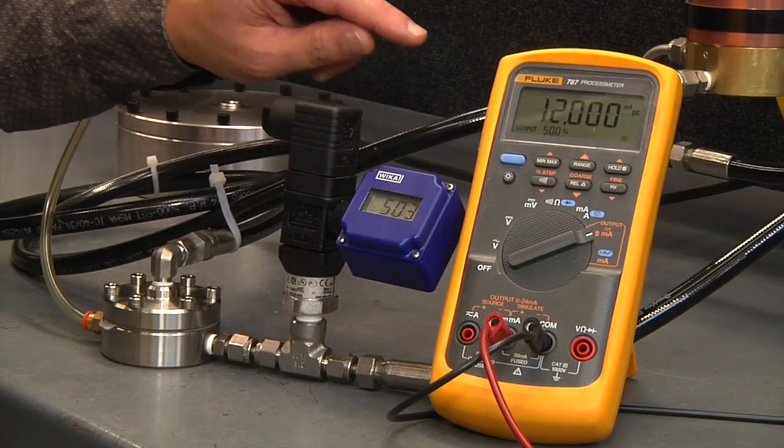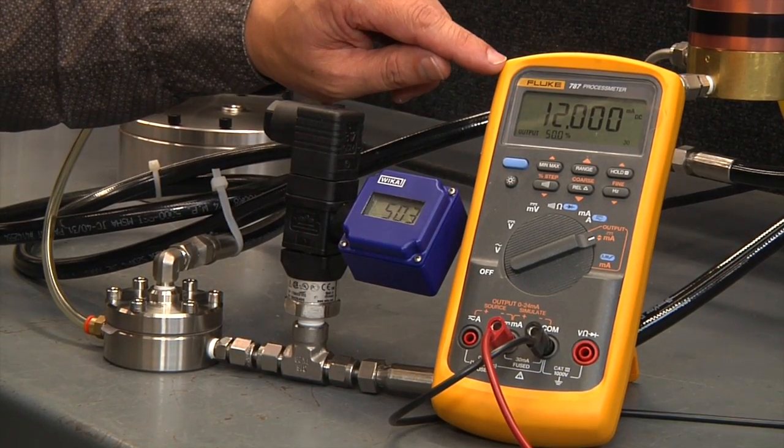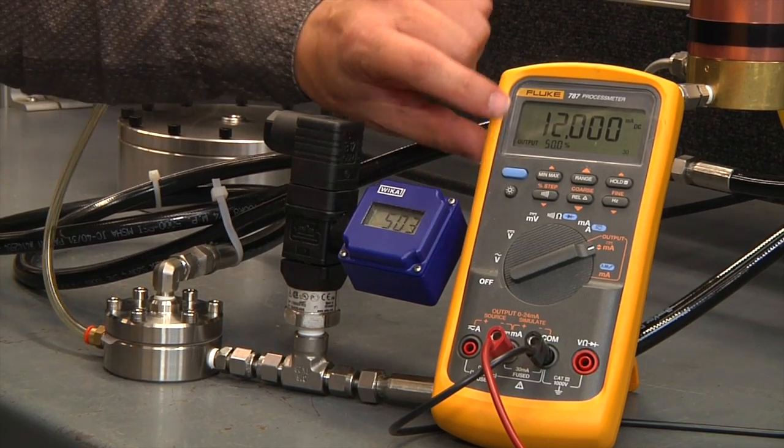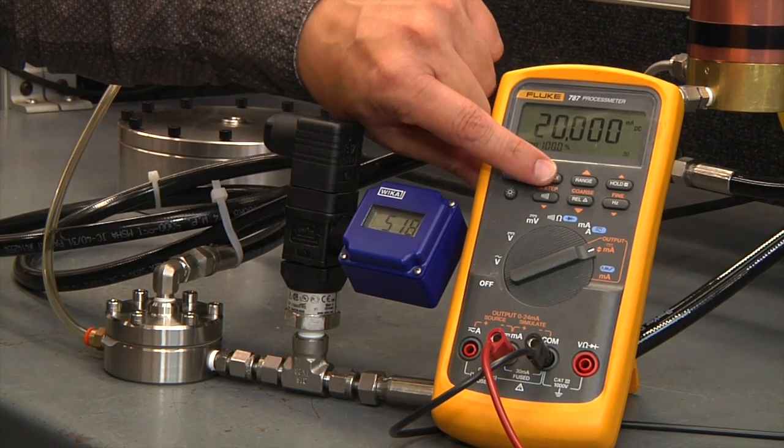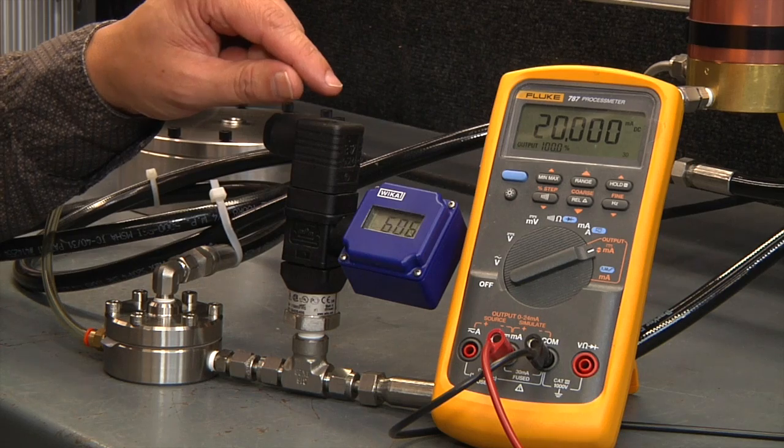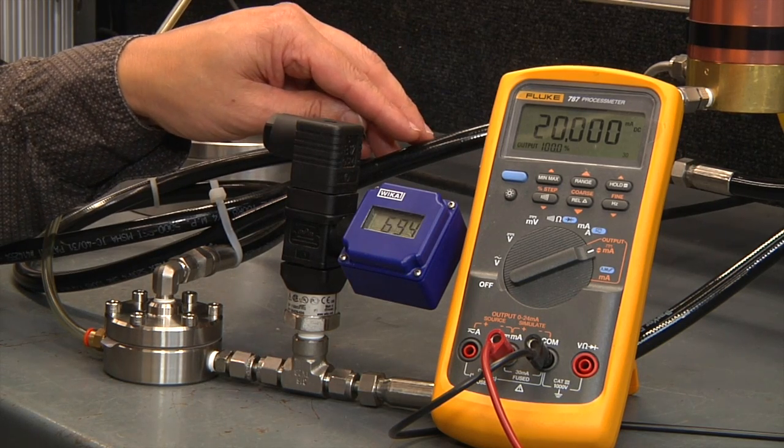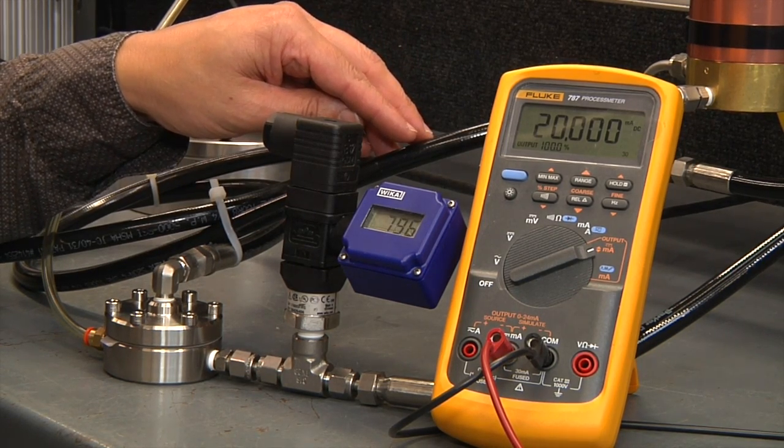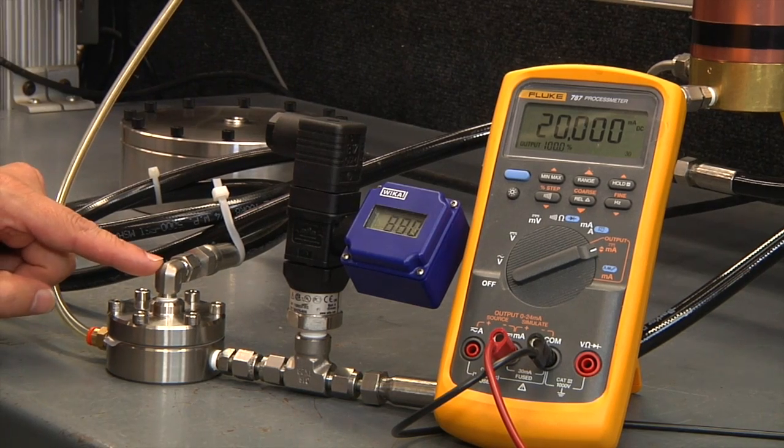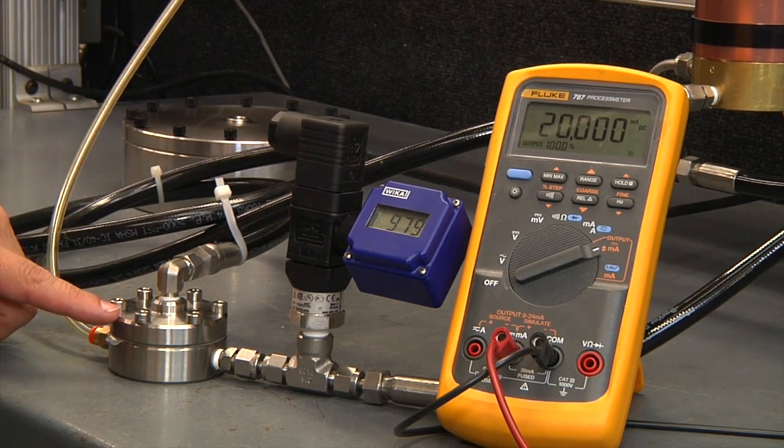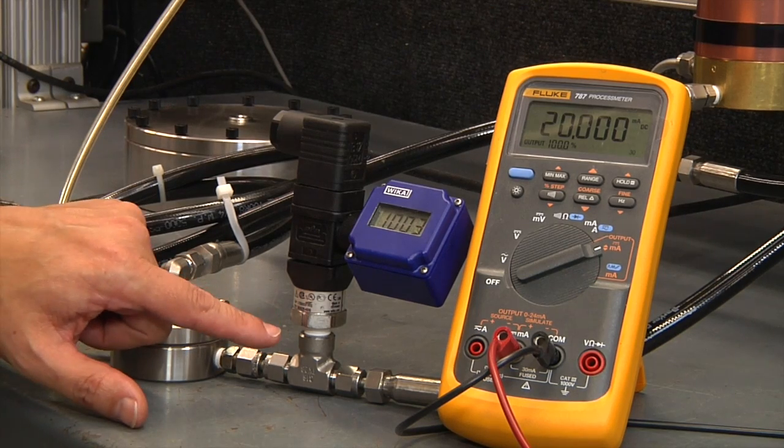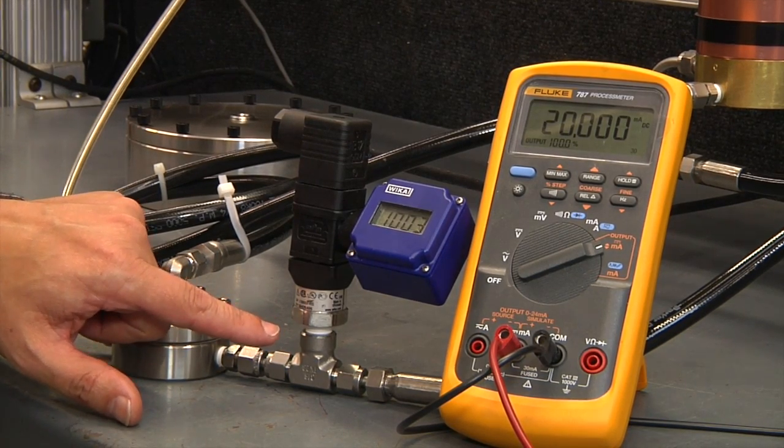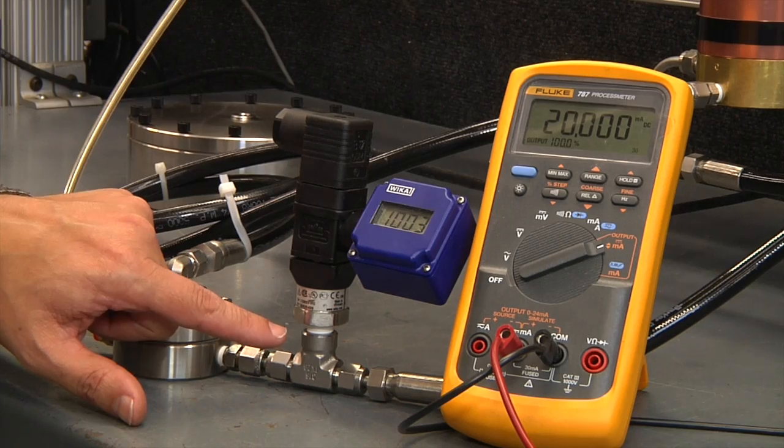Now we'll increase the command signal from 12 milliamp to 20 milliamp, which represents 100% command and for this particular unit represents 1000 PSI. So we'll provide 1000 PSI pilot to the LF Series back pressure regulator, which should control 1000 PSI of back pressure in your system.